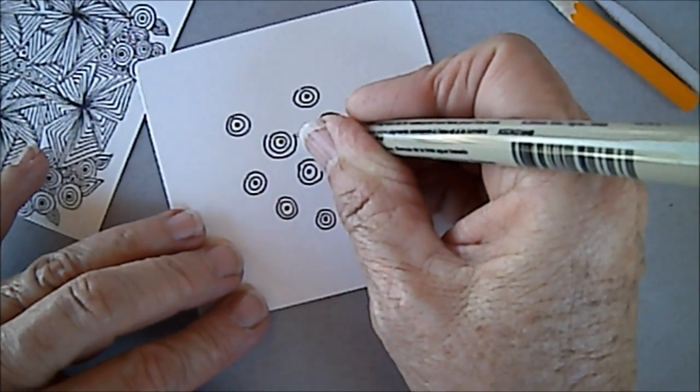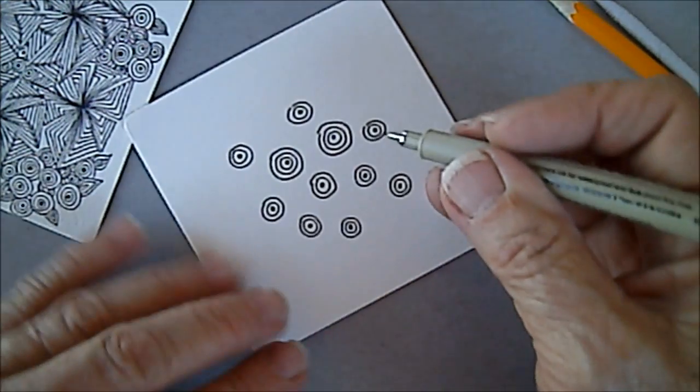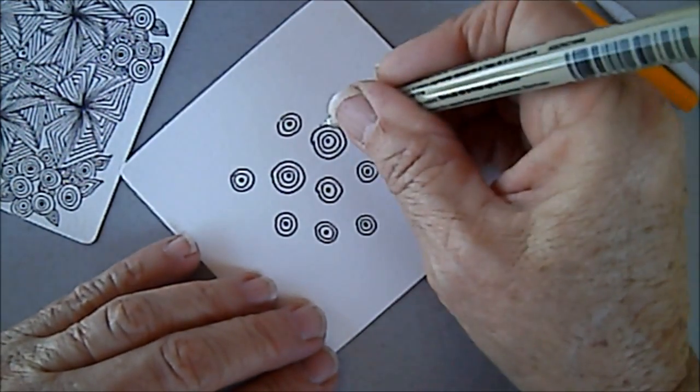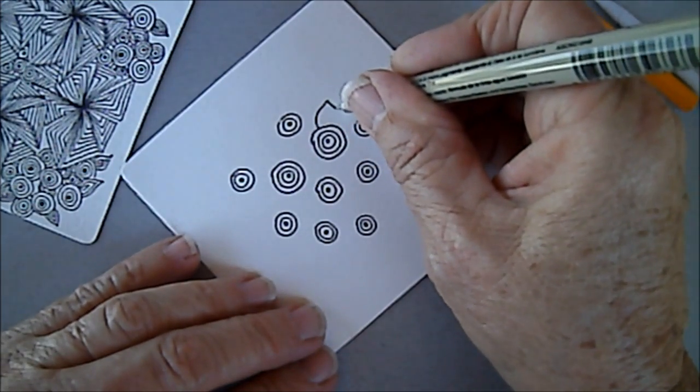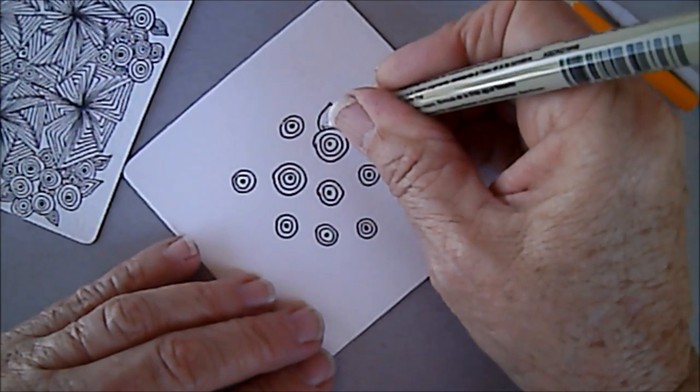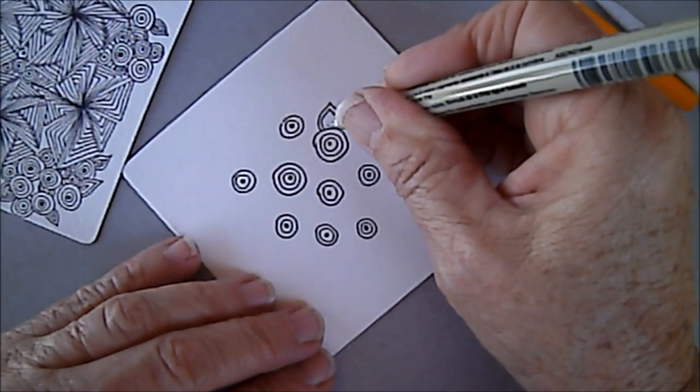And now I'm going to put a leaf shape and echo in that leaf shape.